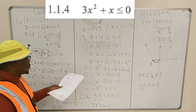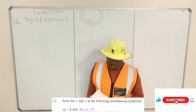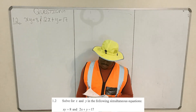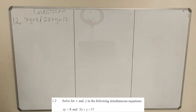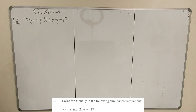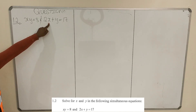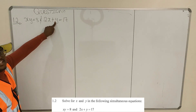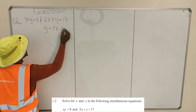Now we are doing 1.2: solve for x and y in the following simultaneous equations. We look at the linear equation first since it is simpler. The y term has a coefficient of 1, so we solve for y. From that equation, y equals 17 minus 2x.